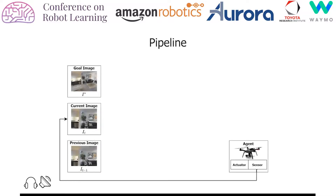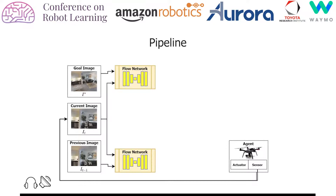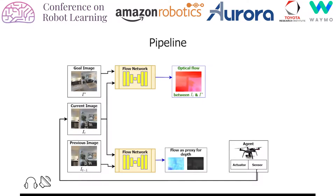The agent in the environment takes its current RGB sensor observation, previous observation, and the goal image as input. These images are passed through a flow encoder network that predicts the flow between the current observation and the previous observation, and between the current observation and the goal image respectively, in order to obtain the desired optical flow. We use FlowNet 2.0 and DD Flow as our flow encoders.